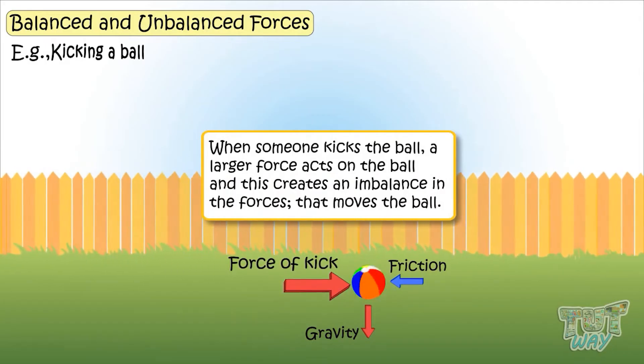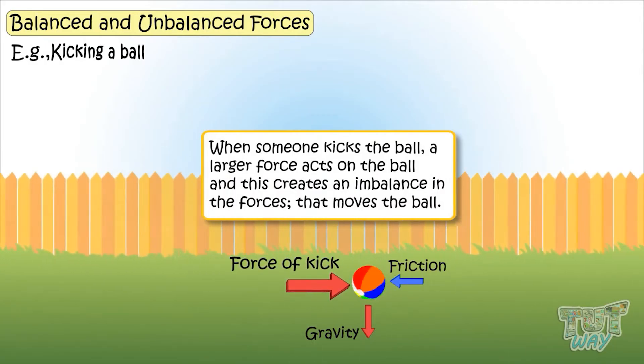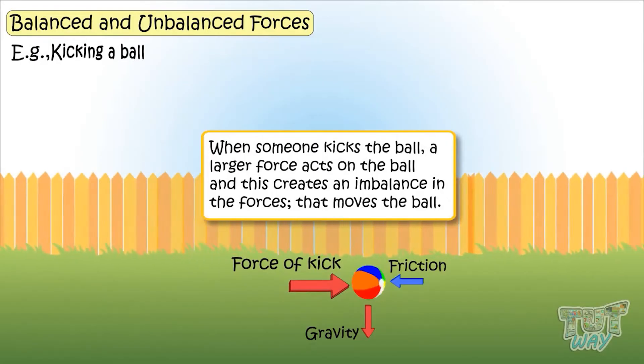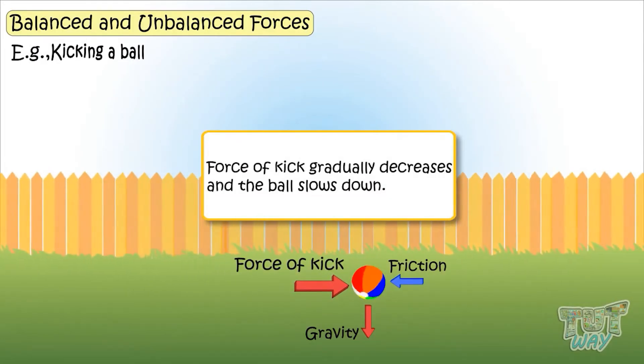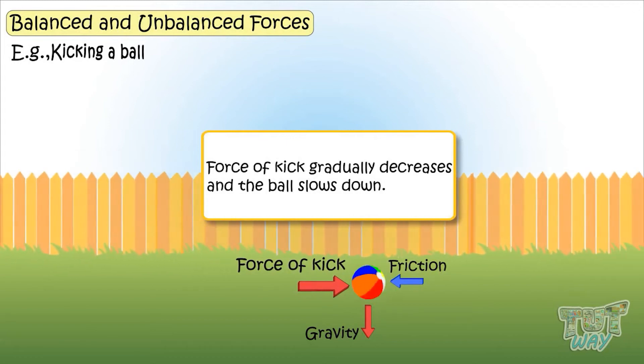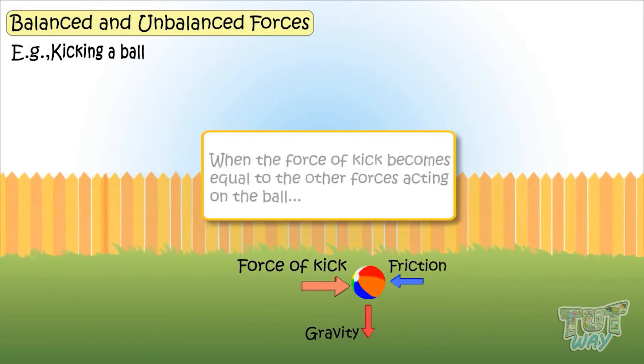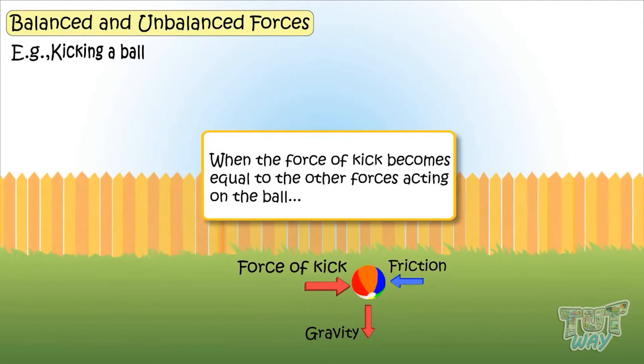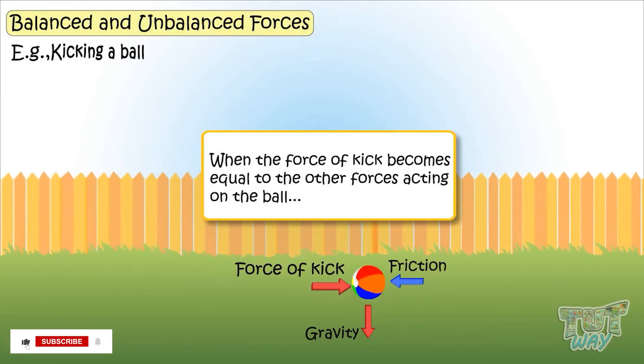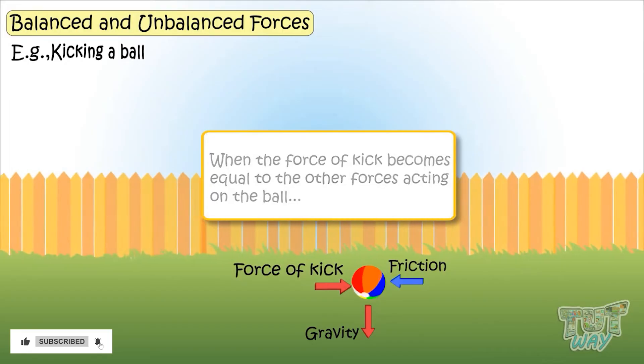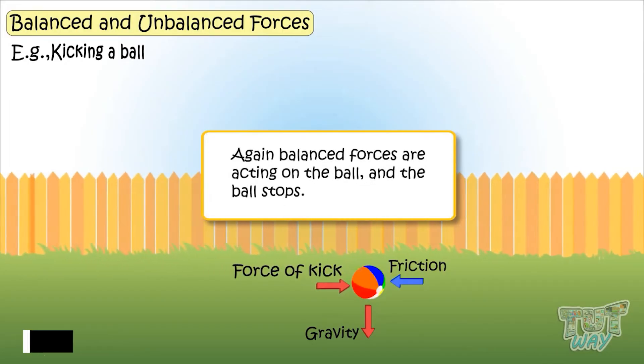And there created an imbalance in the forces that moves the ball. Now the force of kick gradually decreases and the ball slows down. When the force of the kick becomes equal to the other forces acting on the ball, again, balanced forces are there acting on the ball and the ball stops.